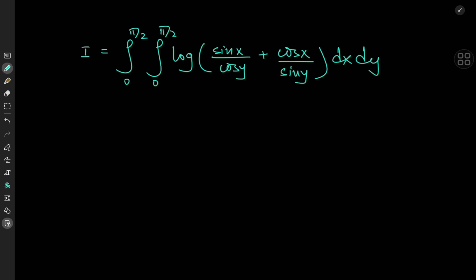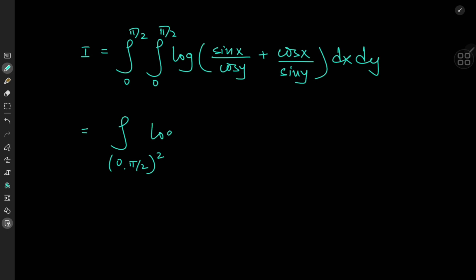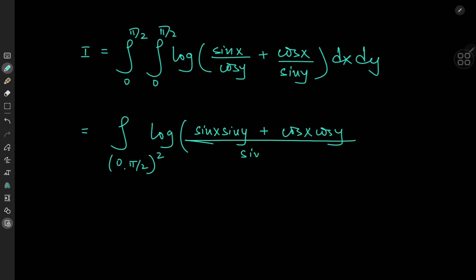A nice place to start would be the argument of the logarithm function, because we can make use of the properties of the trig functions quite nicely here. So let's write this as the double integral over the region zero to π/2 squared of log of sine x times sine y plus cosine x times cosine y, divided by sine y times cosine y, dx dy.